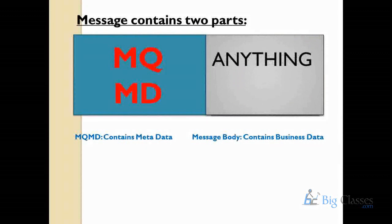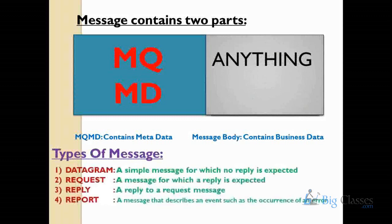IBM MQ server does not produce any business message and does not provide any business data in the message. The source MQ program must produce the business message with business data. The remote MQ program must consume that business message on IBM MQ server. IBM MQ is not responsible to construct messages or define business data. In IBM MQ, there are four predefined message types: datagram, request, reply, and report. The source application defines the message type while producing the business message based on transaction data.